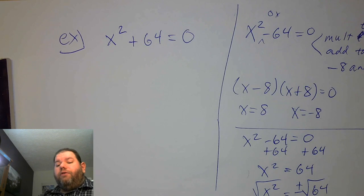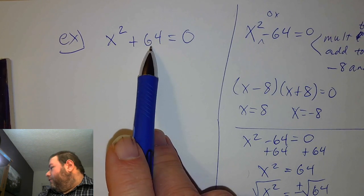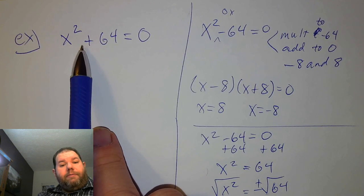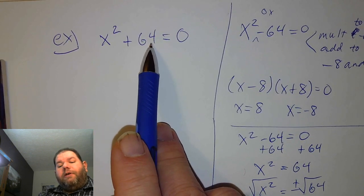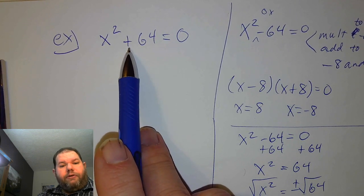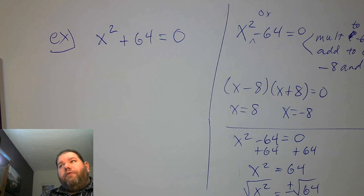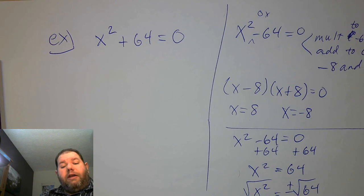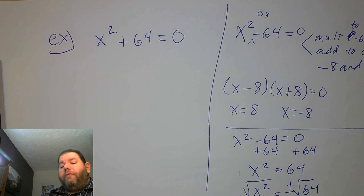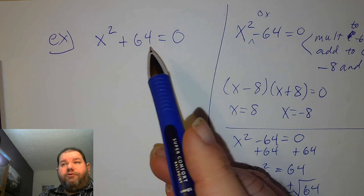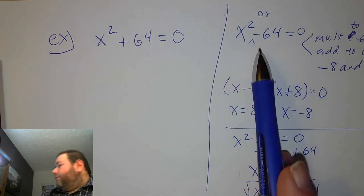Now for x squared plus 64 equals 0: we're trying to find two numbers that multiply to positive 64 but add up to 0. For two real numbers to multiply to a positive result, they must be both positive or both negative — and if they're the same sign, their sum can't be zero. So this is not factorable in the traditional sense, though we can still solve it.